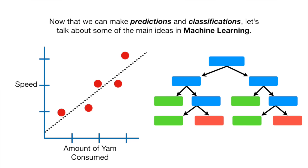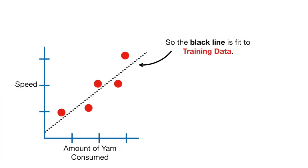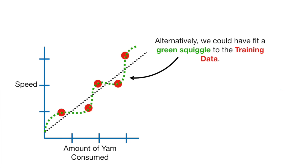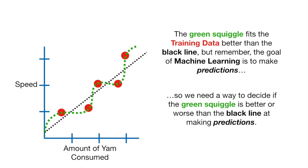Now that we can make predictions and classifications, let's talk about some of the main ideas in machine learning. In machine learning lingo, the original data is called training data, so the black line is fit to training data. Alternatively, we could have fit a green squiggle to the training data. The green squiggle fits the training data better than the black line. But the goal of machine learning is to make predictions, so we need a way to decide if the green squiggle is better or worse than the black line at making predictions.